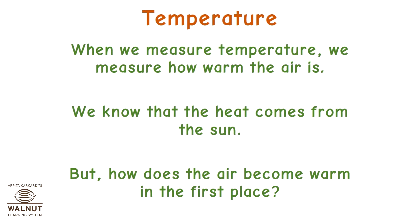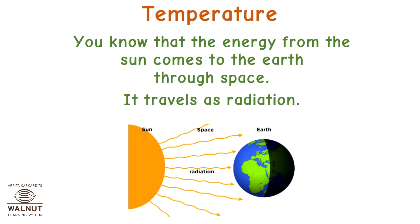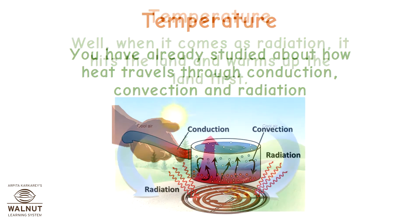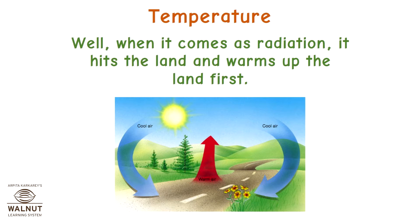When we measure temperature, we measure how warm the air is. We know that the heat comes from the sun. But how does the air become warm in the first place? The energy from the sun comes to the earth through space — it travels as radiation. When it comes as radiation, it hits the land and warms up the land first.